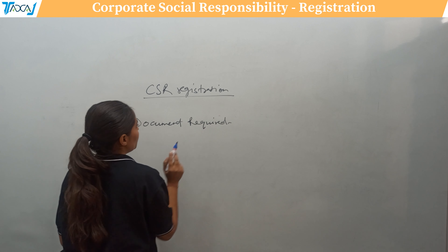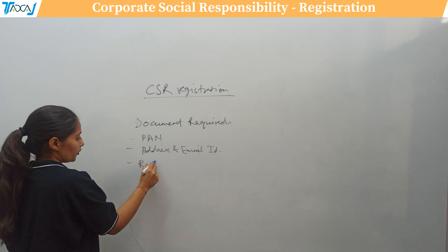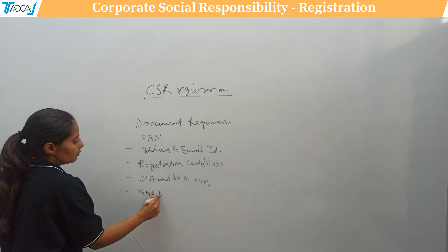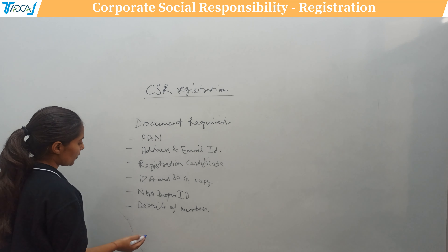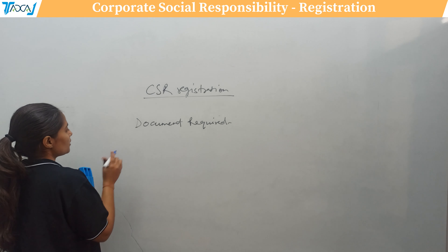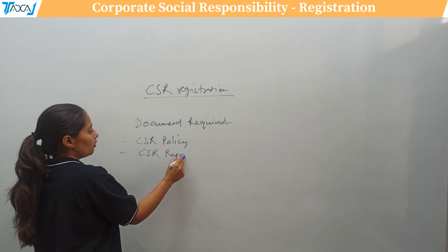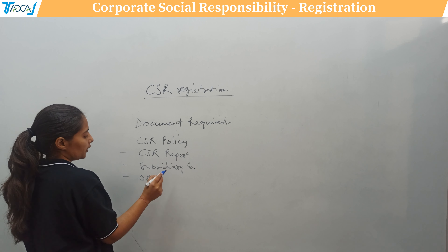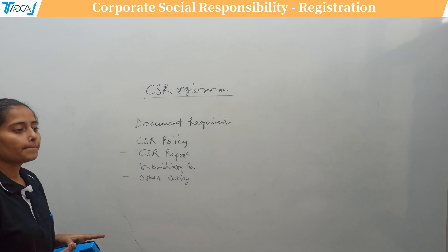For filing CSR-1, the required documents include: PAN, address, and email ID; registration certificate; copy of 12A and 80G orders from the Income Tax department; Darpan ID of the NGO; details of members, trustees, and secretary; PAN and signature of the authorized signatory; CSR policy; CSR report; and details of any subsidiary company or other entity working under or through the organization.